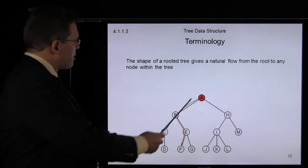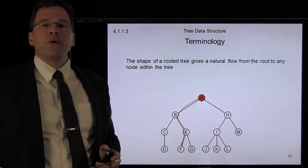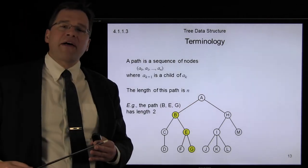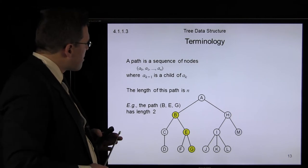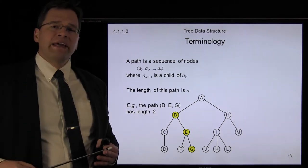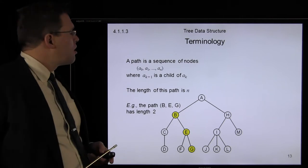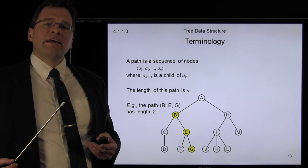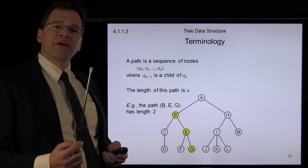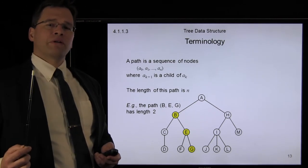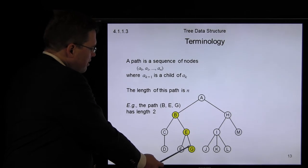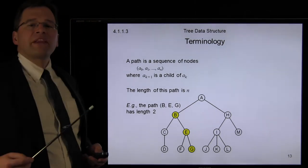Let's take a look at this tree. You'll notice that there is a natural path starting at the root going down towards any node within the tree. A path is a sequence of nodes: A0, A1, A2, going all the way up to An, containing N plus 1 nodes. We will say that it's a path of length N if each subsequent node within the path is a child of the previous one. So, for example, here I have a path B, E, G. B is the parent of E, and E is the parent of G. The length of that path is said to be two.